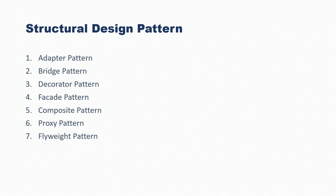The next category is called structural design patterns. The name itself suggests what it is — structural design patterns describe how objects and classes can be combined to form a large structure. There are seven design patterns in this category: Adapter, Bridge, Decorator, Facade, Composite, Proxy, and Flyweight.